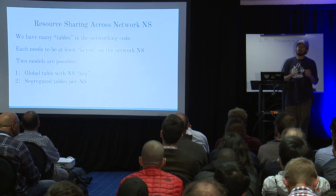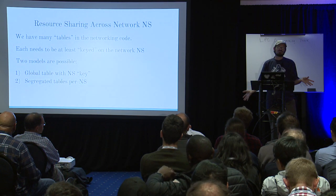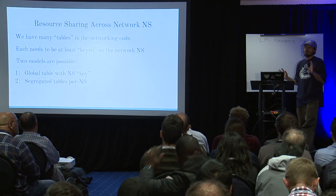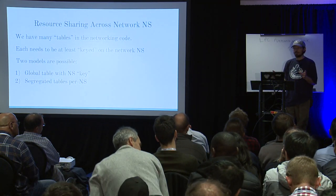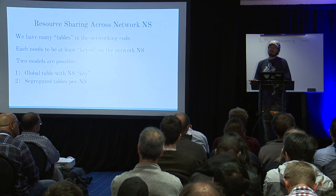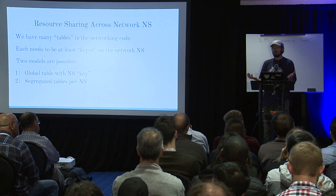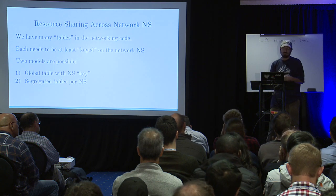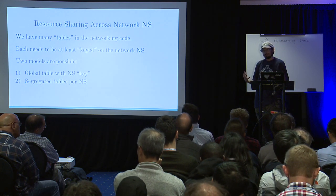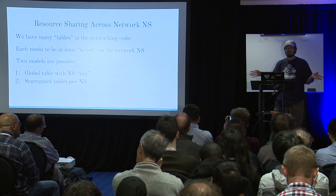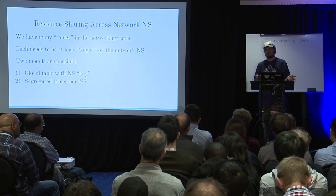This brings me to my next topic: resource sharing across network namespaces. We have a bunch of tables in the kernel, some controlled by external entities. The best example is the neighbor table, or the ARP table. Someone tries to communicate with us, we make an ARP entry, and the table grows based on how many entries we need. There's a global limit and we start garbage collecting once we pass that limit. However, that limit is global — if you've got 100 namespaces, one of them can take up most of that limit to the detriment of every other namespace on your system.